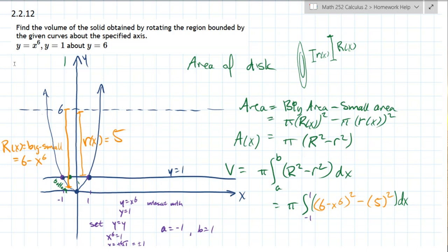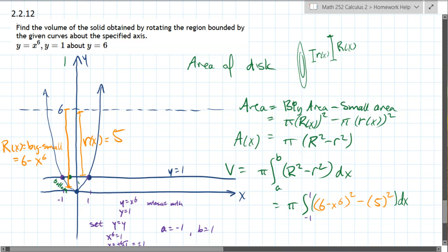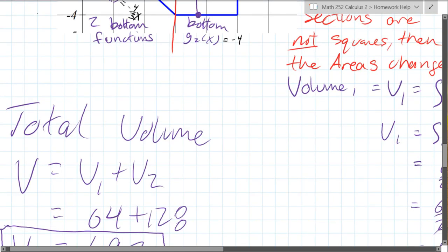We're gonna find the volume of a solid where we're rotating the region bounded by two curves, y equals x to the six and y equals one about the line y equals six.